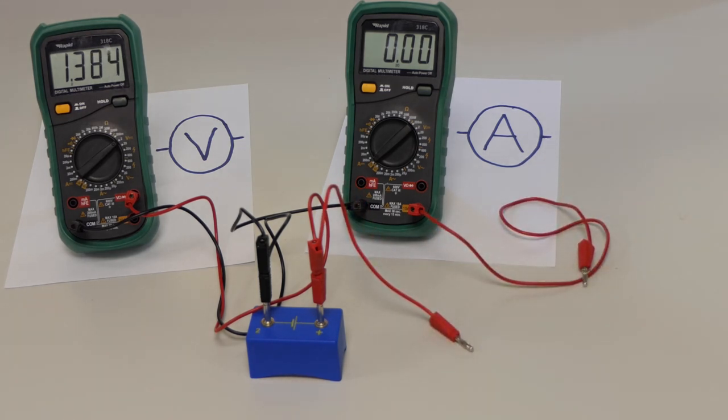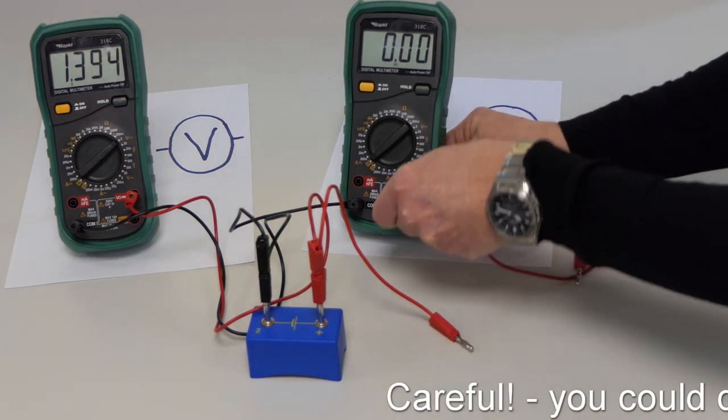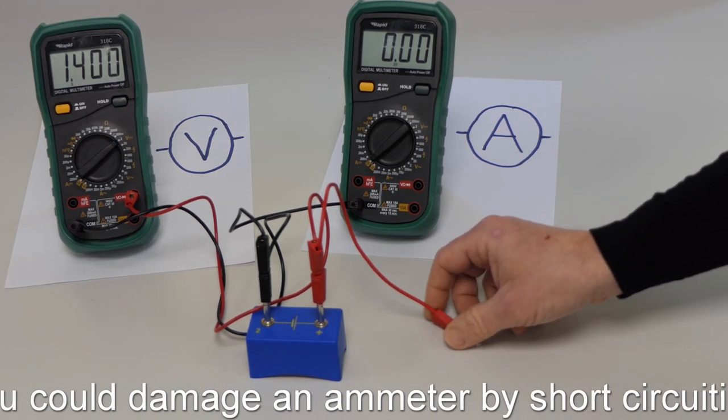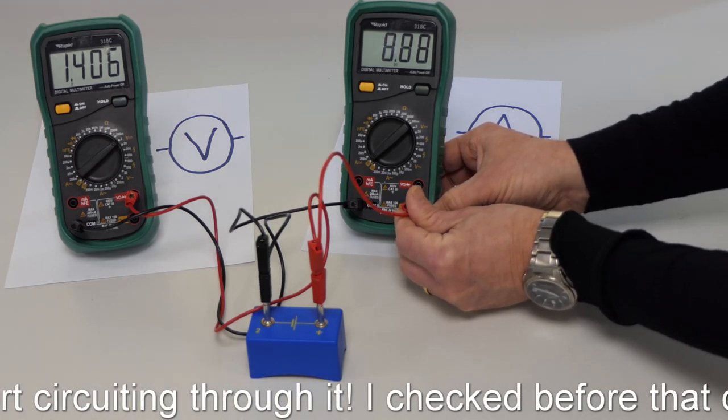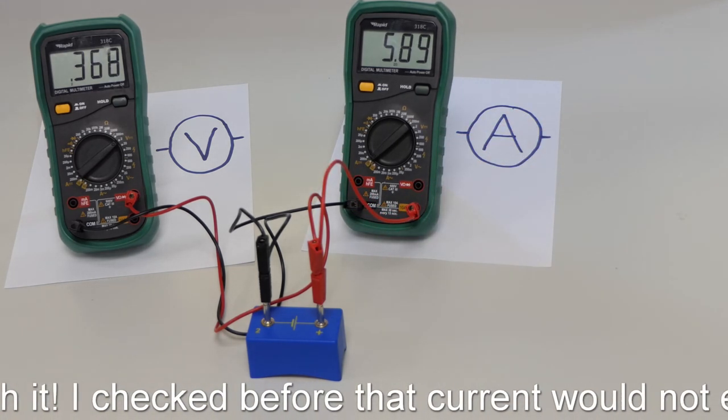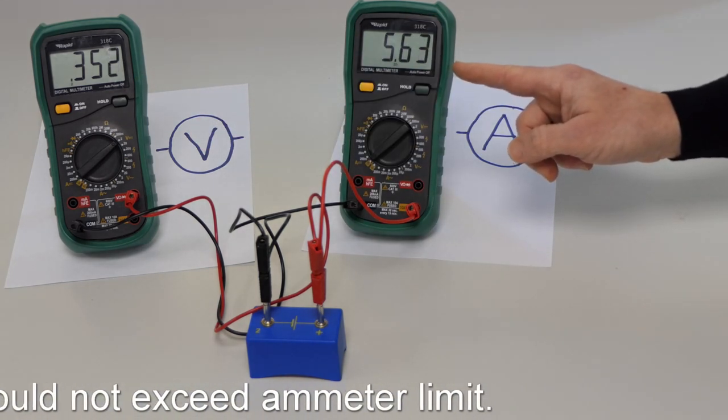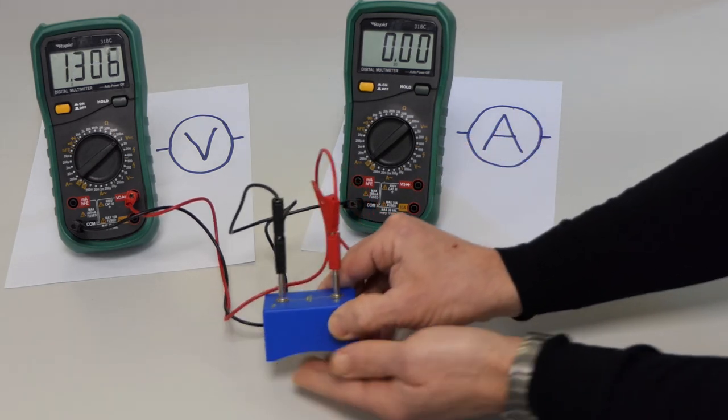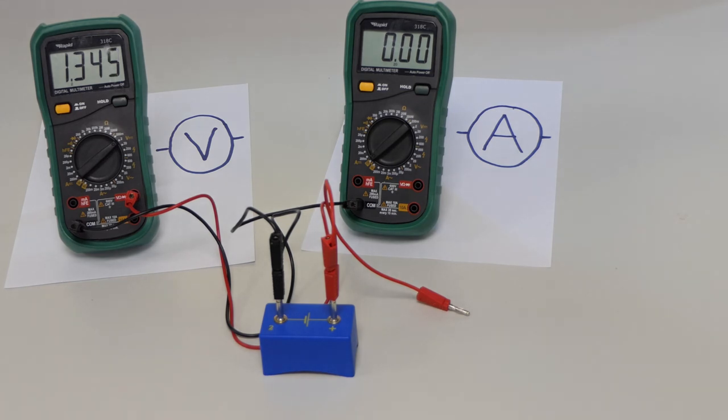I can take this one step further by short circuiting the battery. Just connecting it directly across the ammeter and you can see that the terminal volts goes down even more when I'm getting over five amps of current. But the battery will be getting quite warm from drawing so much current.